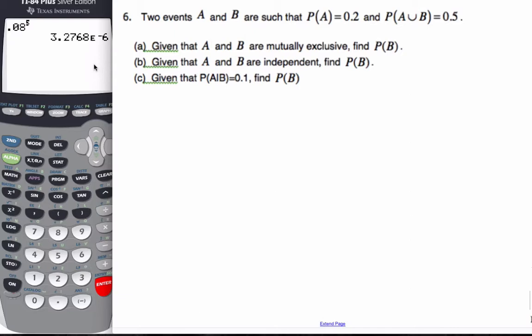And finally, we have two events A and B such that this is true. We are told that A and B are mutually exclusive. Find P(B).